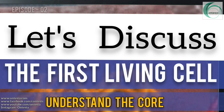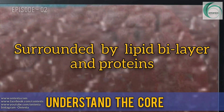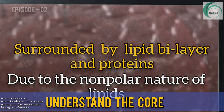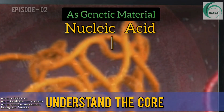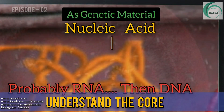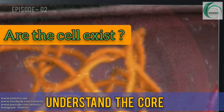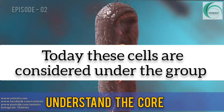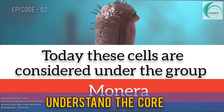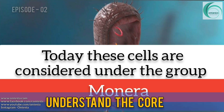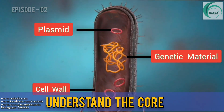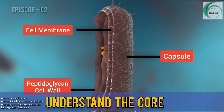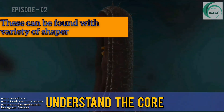Let's discuss the first living cell. Surrounded by a lipid bilayer and proteins due to the nonpolar nature of lipids, with nucleic acid as genetic material — probably RNA, then DNA — these are the earliest cells. Today these cells are considered under the group Monera. Monerans are the simplest group of cellular organisms and they are found in a variety of shapes.